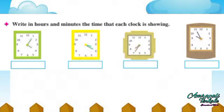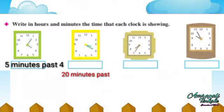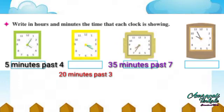Look at the clocks below and write the time in hours and minutes. First clock: five minutes past four. Second clock: twenty minutes past three. Third clock: thirty-five minutes past seven. Fourth clock: fifty-five minutes past nine.